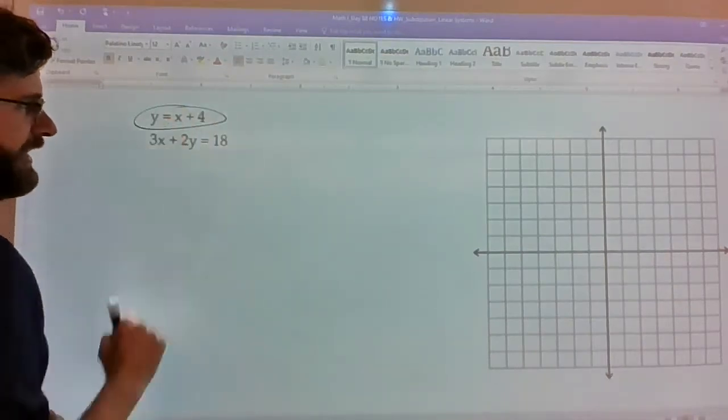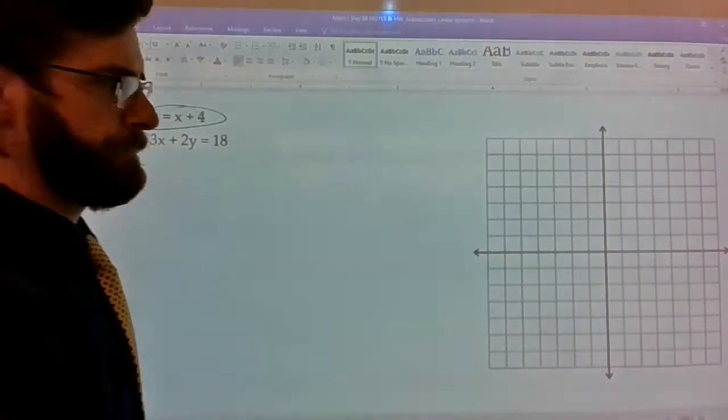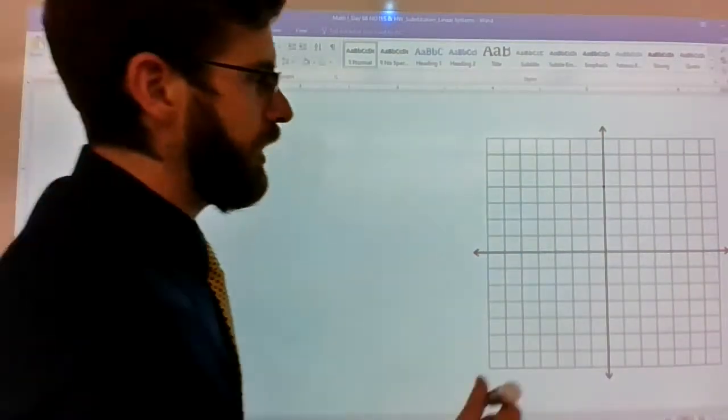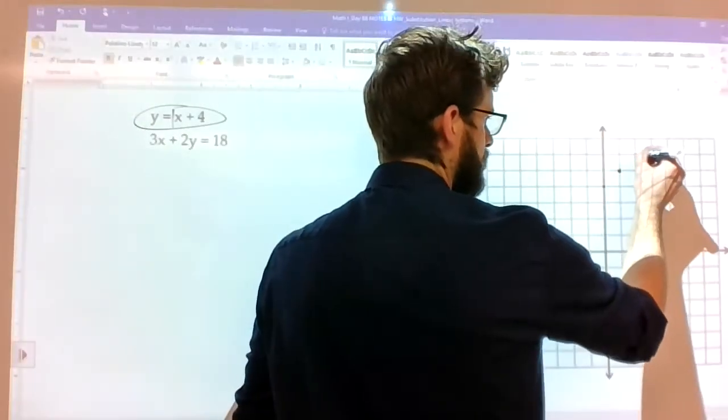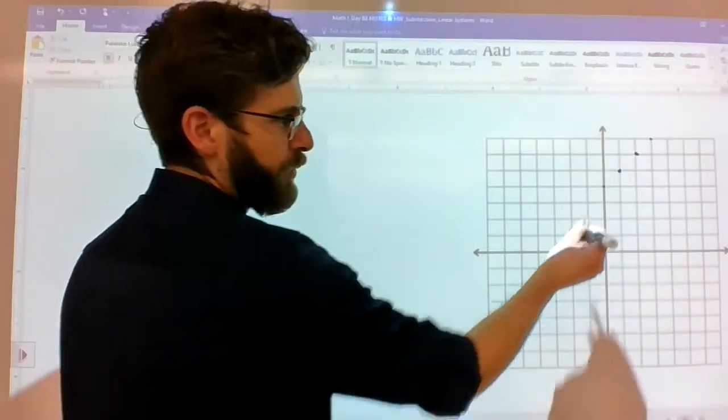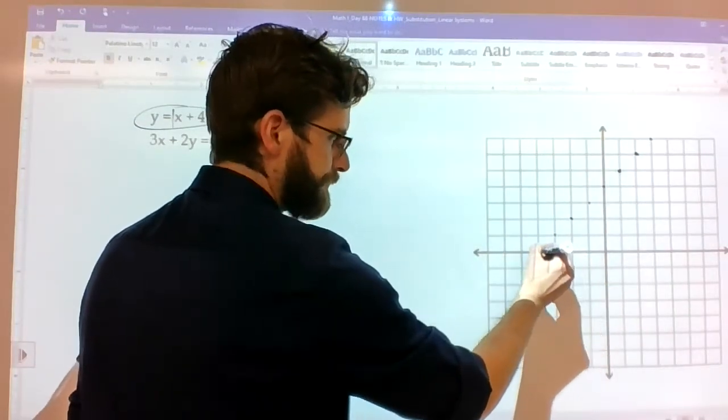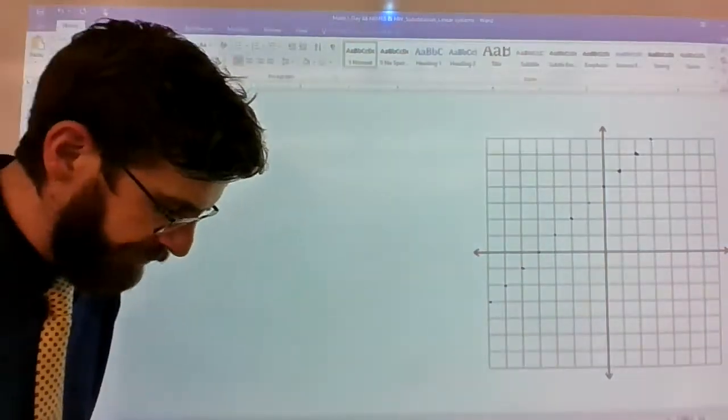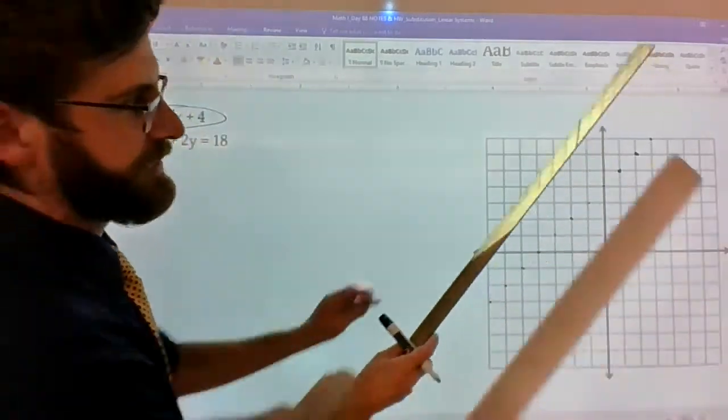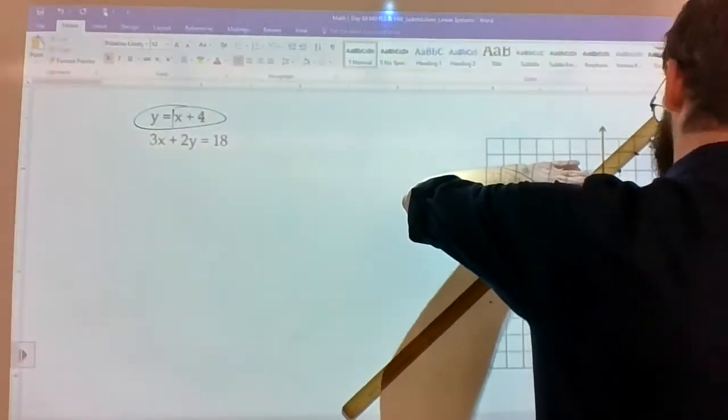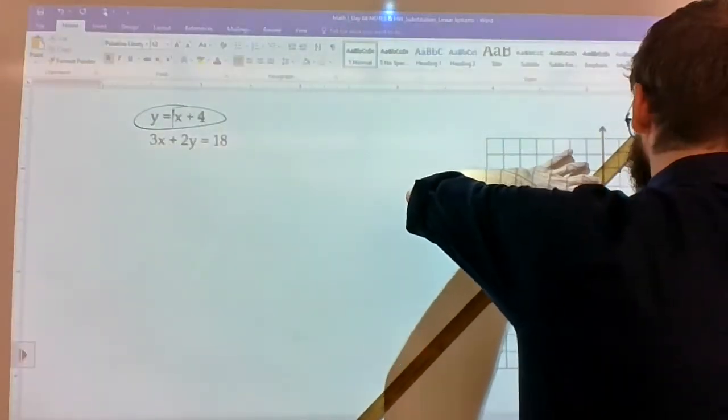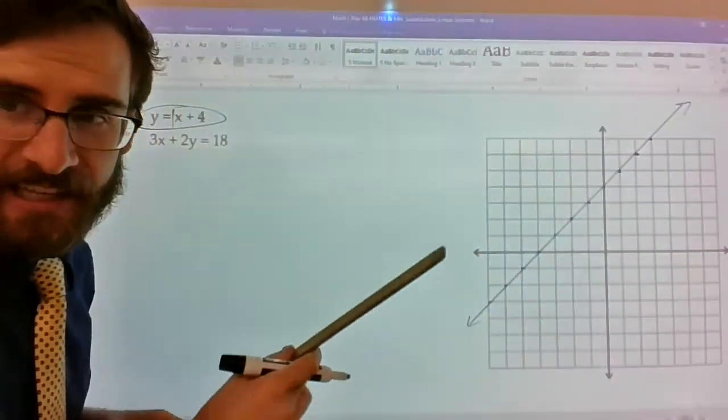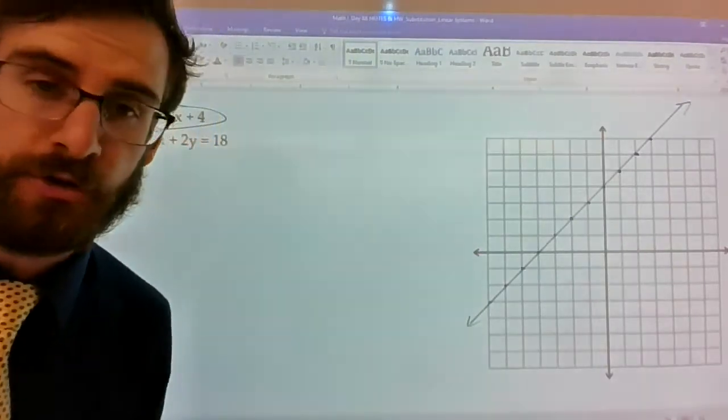So here's what you'd do. You'd first have your graph ready on this one. It starts at 4, 1, 2, 3, 4, you'd go up one, right one, or down one, left one as many times as possible. You'd graph your line, connect the dots, and you're left with that line.